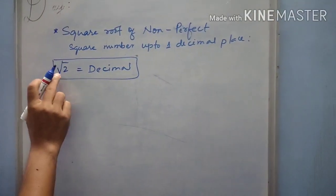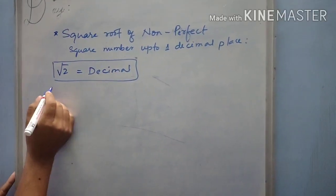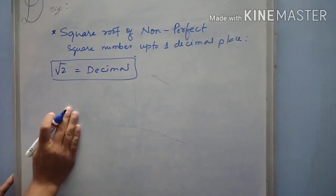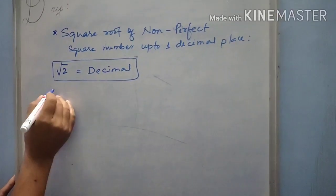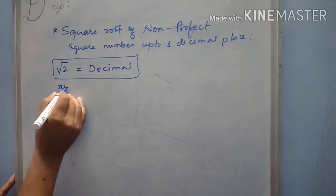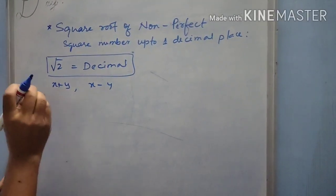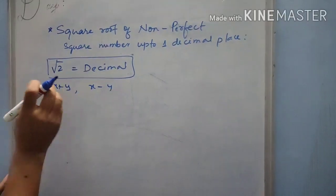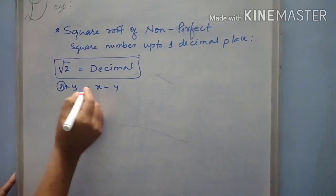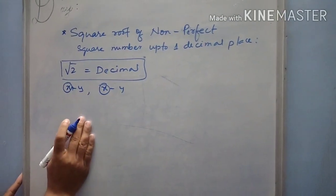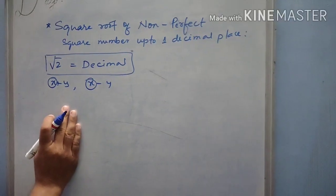So now, let us see how to find the square root of this type of number. Before starting, I would like to tell you, any number given here, you try to express in the form of x plus y or x minus y. You have to write in the form of addition of two numbers or subtraction of two numbers. The first value should be a square number and the second number may be square number or non-perfect square number. That is not a problem.